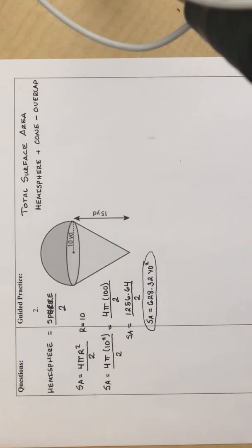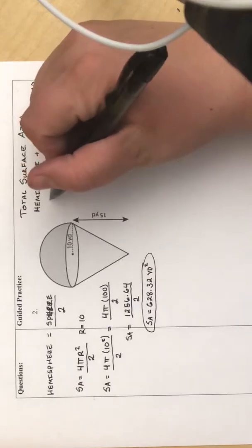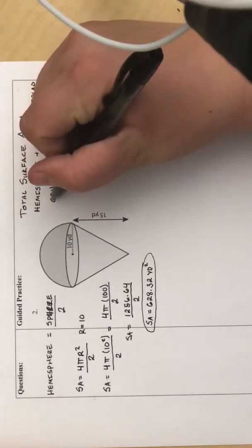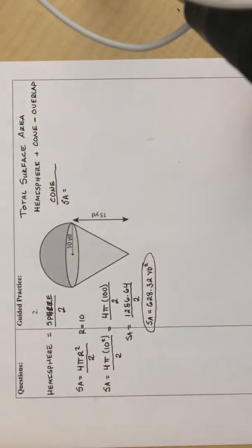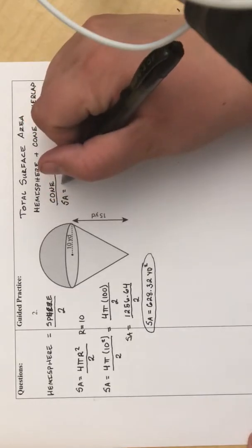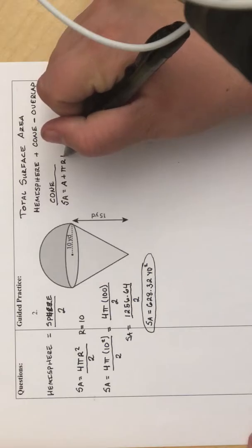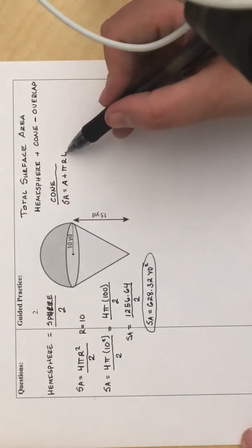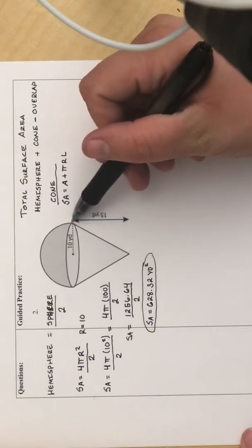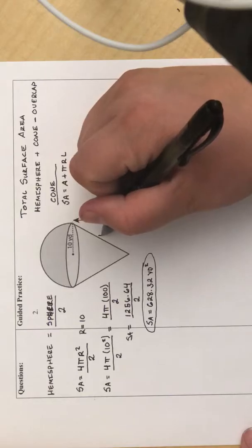Next, what we are going to do is find the surface area of the cone by using the formula. So the surface area equals A plus pi times r times L. Now, if you remember, L is the slant height, which means it's the length of this slanted piece. So it's not 15, it's on the outside.